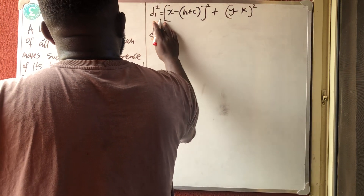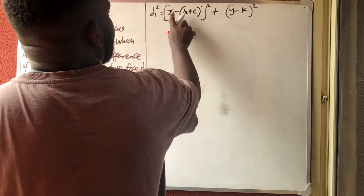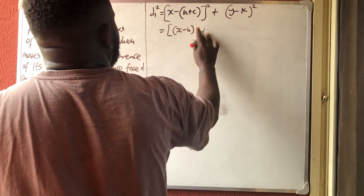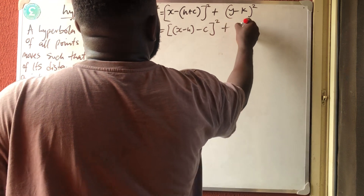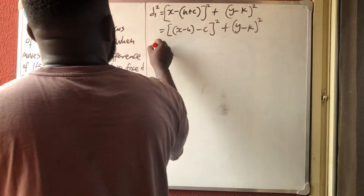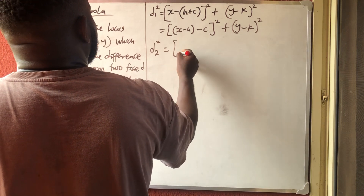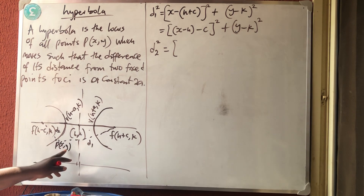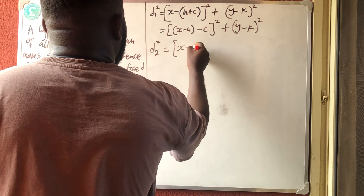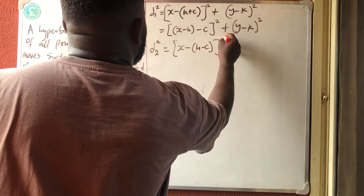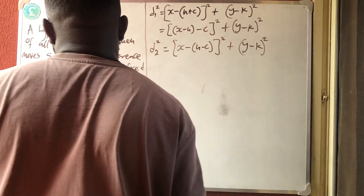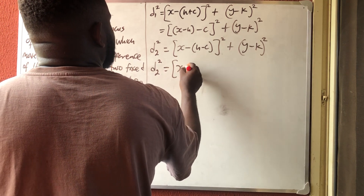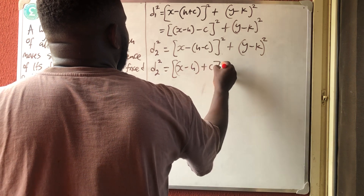Then D2: bringing H and K together, D2 squared equals (X − (H − C))² + (Y − K)². Opening the bracket, D2 squared equals (X − H + C)² + (Y − K)².